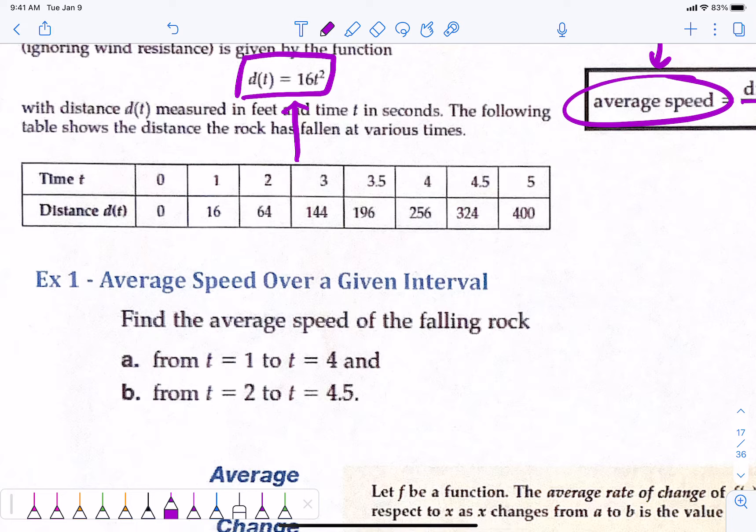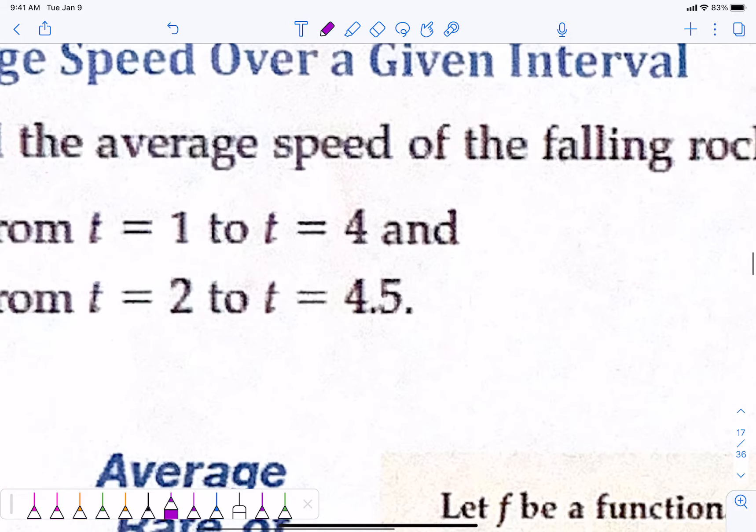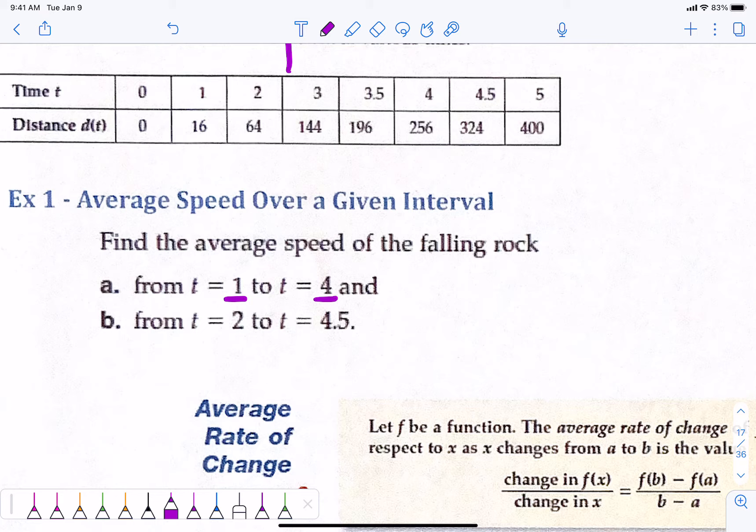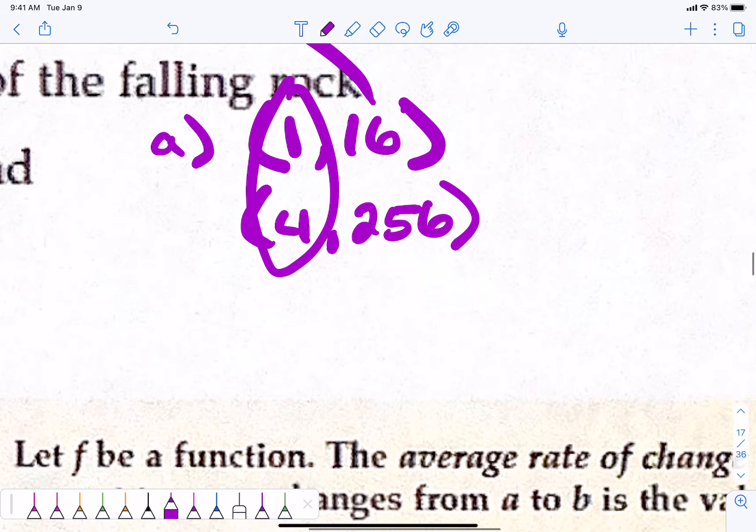Example one. Find the average speed over an interval from one second to four seconds. Now, here's how I like to do this. Please do it this way because it makes it super easy. Part A is going from one second to four seconds. At one second, what is the y-coordinate? 16. You found that in the table right here. And at four seconds, what is the y-coordinate? 256. So all I have to do is do the y2 minus y1 over x2 minus x1.